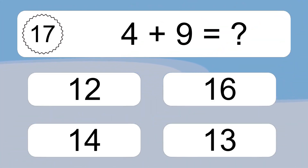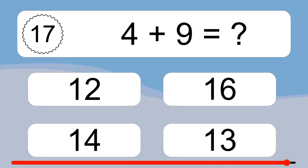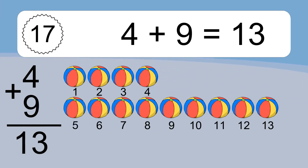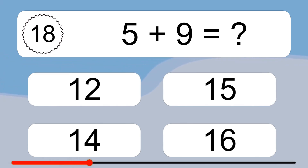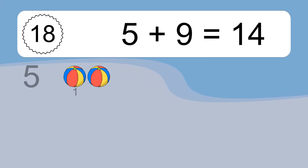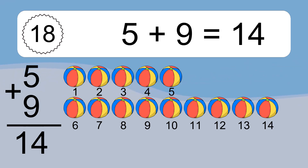4 plus 9 equals what? 5 plus 9 equals what? 5 plus 9 equals 14. Let's count it. 1, 2, 3, 4, 5, 6, 7, 8, 9, 10, 11, 12, 13, 14.